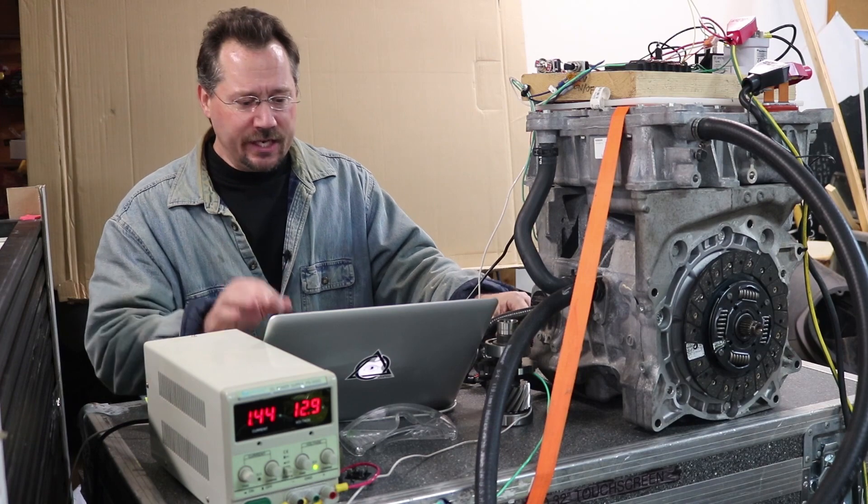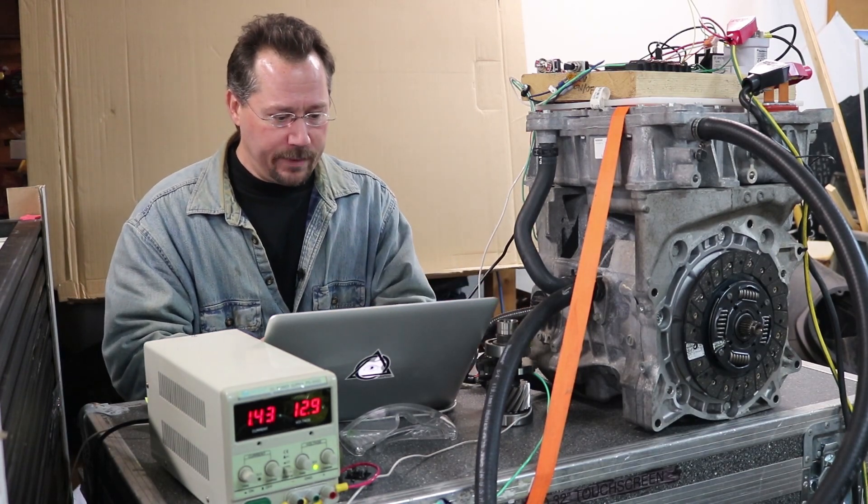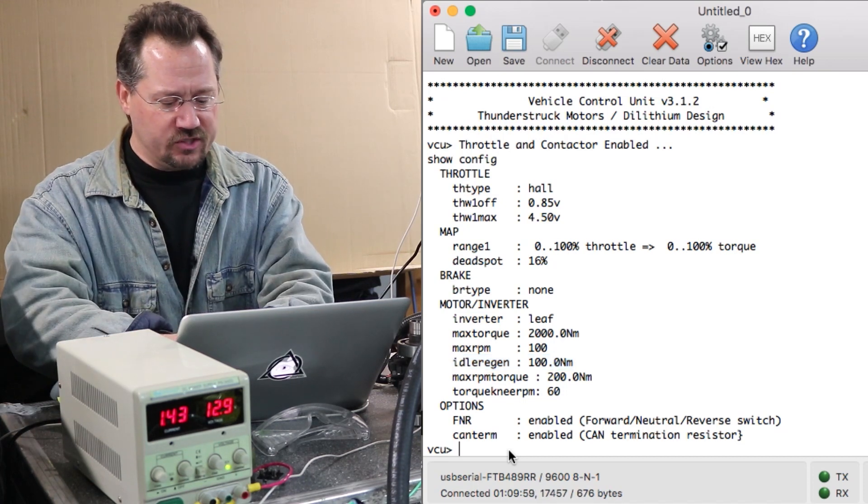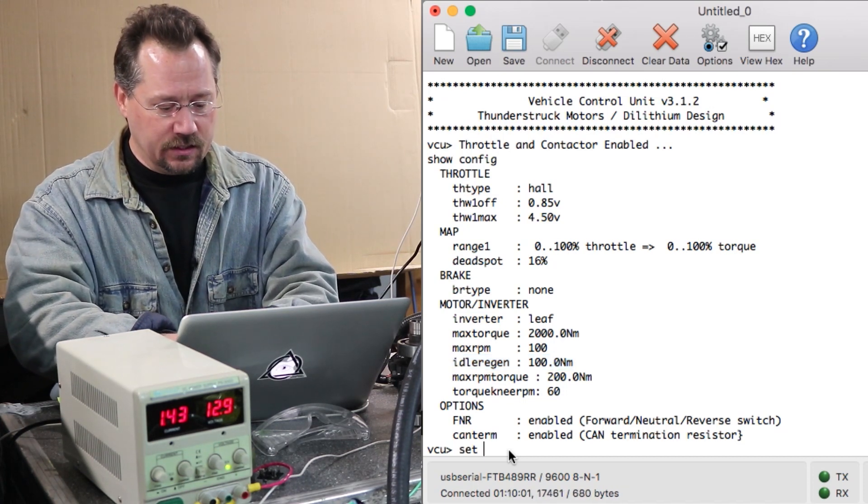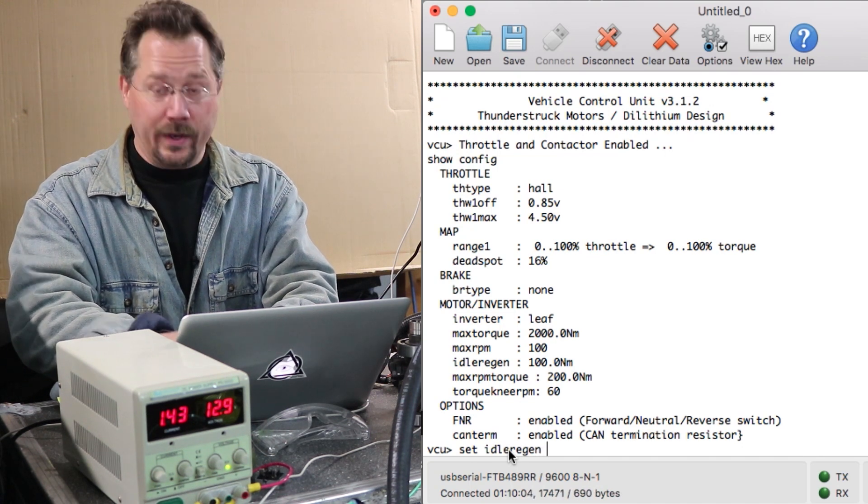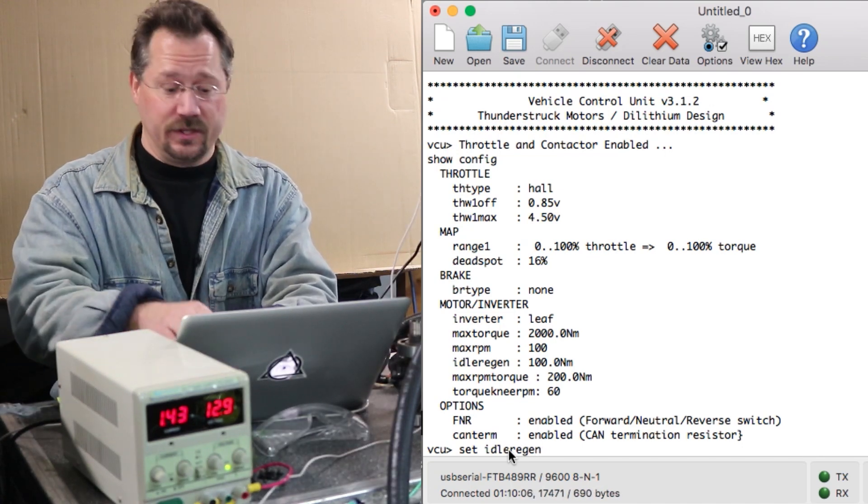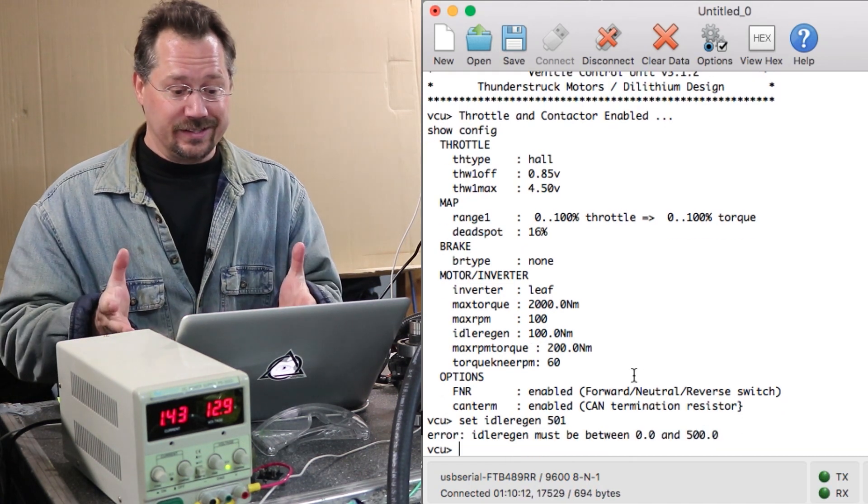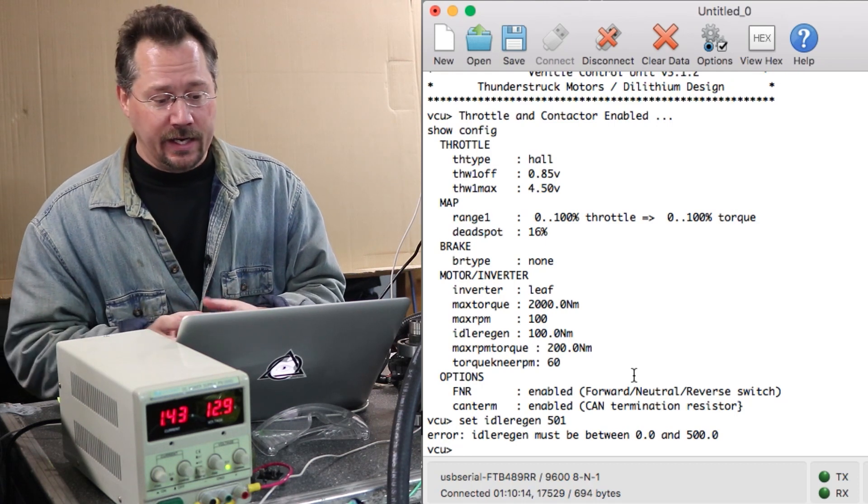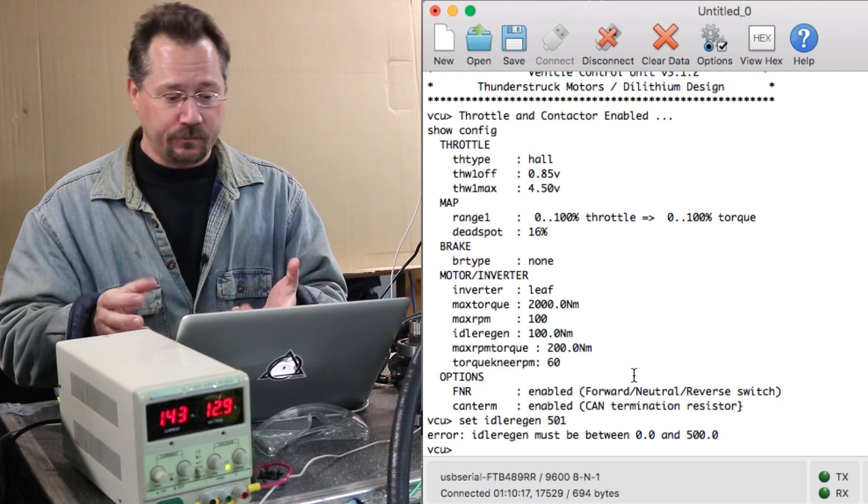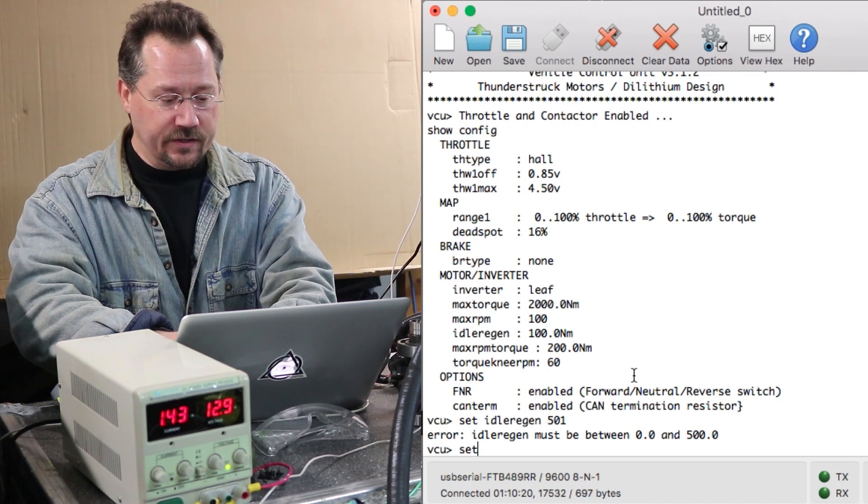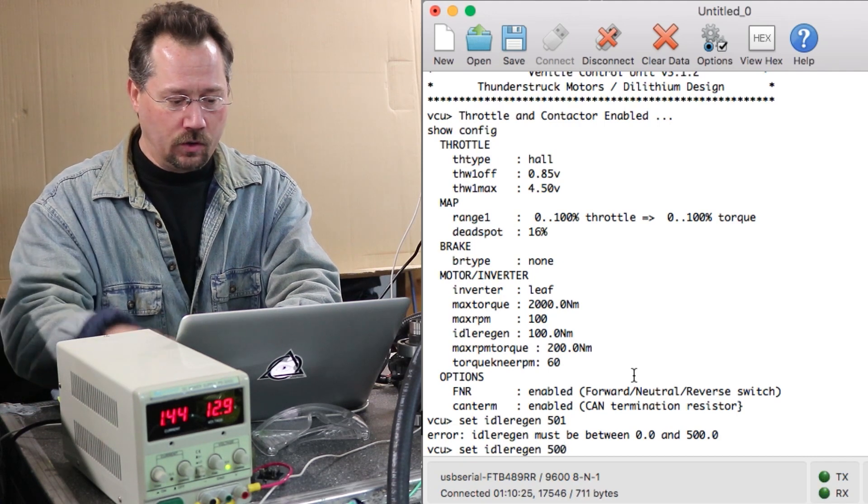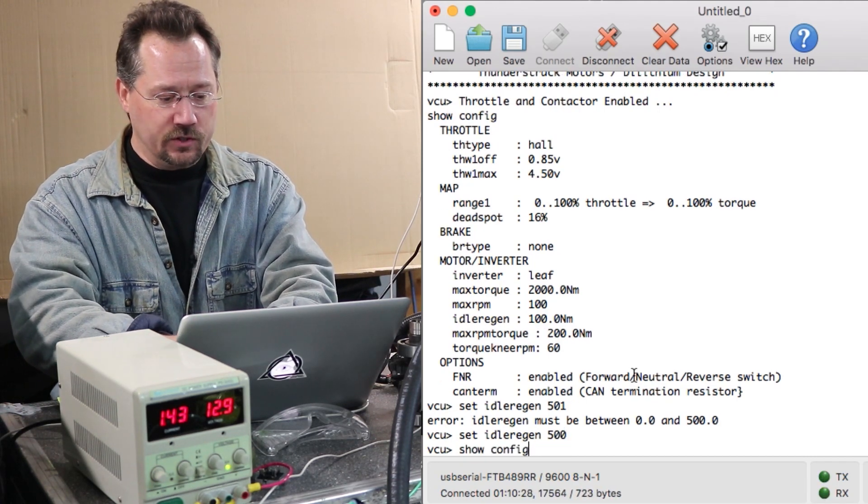Let's change the settings here, let's go back to, so right now our idle regen is set to 100 newton meters, let's change that. Set idle regen, well let's just try taking it up to the maximum. Now if I say I want it to be 501 newton meters it's going to tell me sorry you can't go up that high, the system's only designed for between zero and 500. So let's do 500, set idle regen 500, entered it, show our configuration.